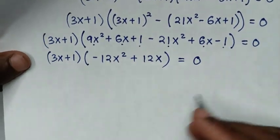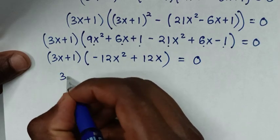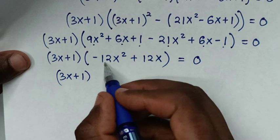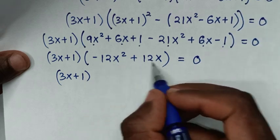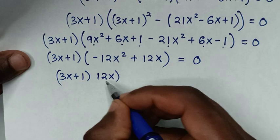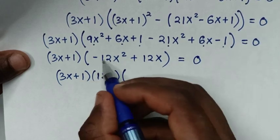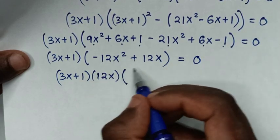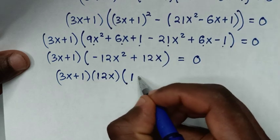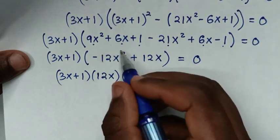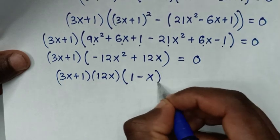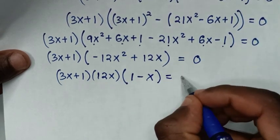In the next step, inside the bracket, 12x is common, so we factor it out. 12x divided by 12x is 1, and minus 12x² divided by 12x is minus x. So we have (3x+1)(12x)(1 minus x) equals 0.